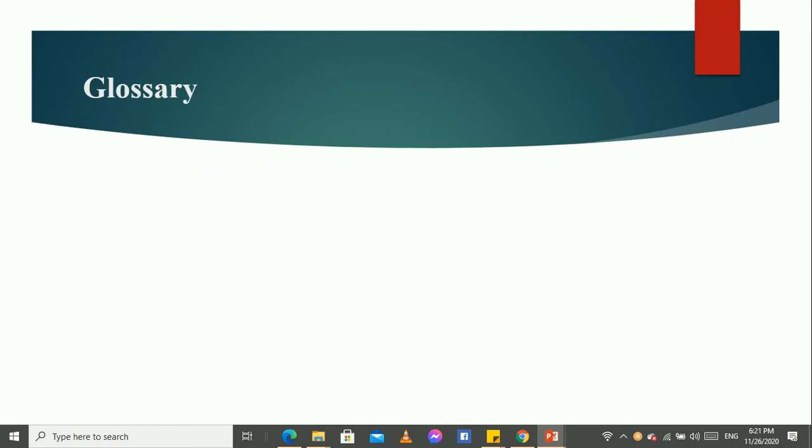So, let us learn the glossary of this poem. India rubber ball - a ball that can bounce very high. The second one is buttercups - small, bright, yellow, wild flowers.